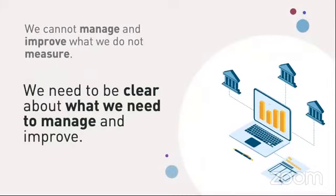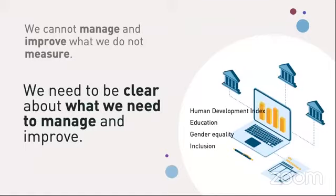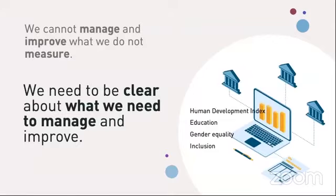This also means that we need to be clear about what it is that we need to manage and improve. Is it the human development index of our region? Is it the quality of education? Is it gender equality? Do we want more inclusion in our urban systems? Because these would then guide us for the rest of our initiatives, from data collection to model building and deployment. Researchers and technologists tend to be obsessed with data and technology and indices, and they forget that these are just tools to achieve much bigger goals for our people.